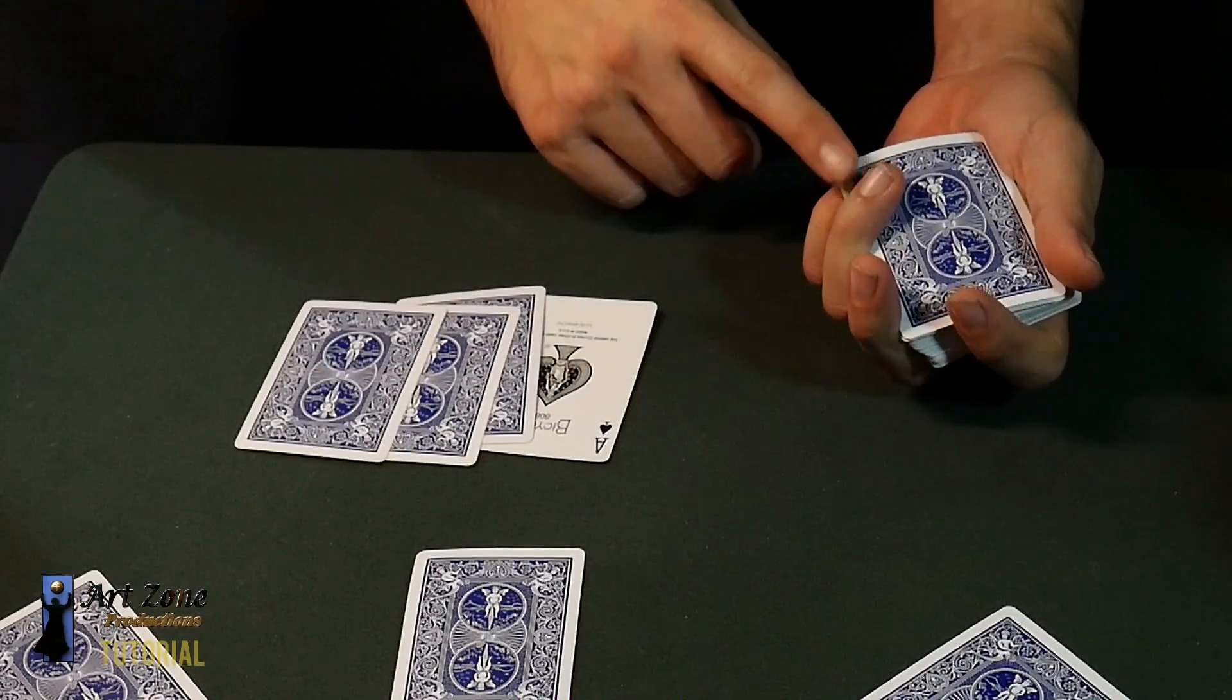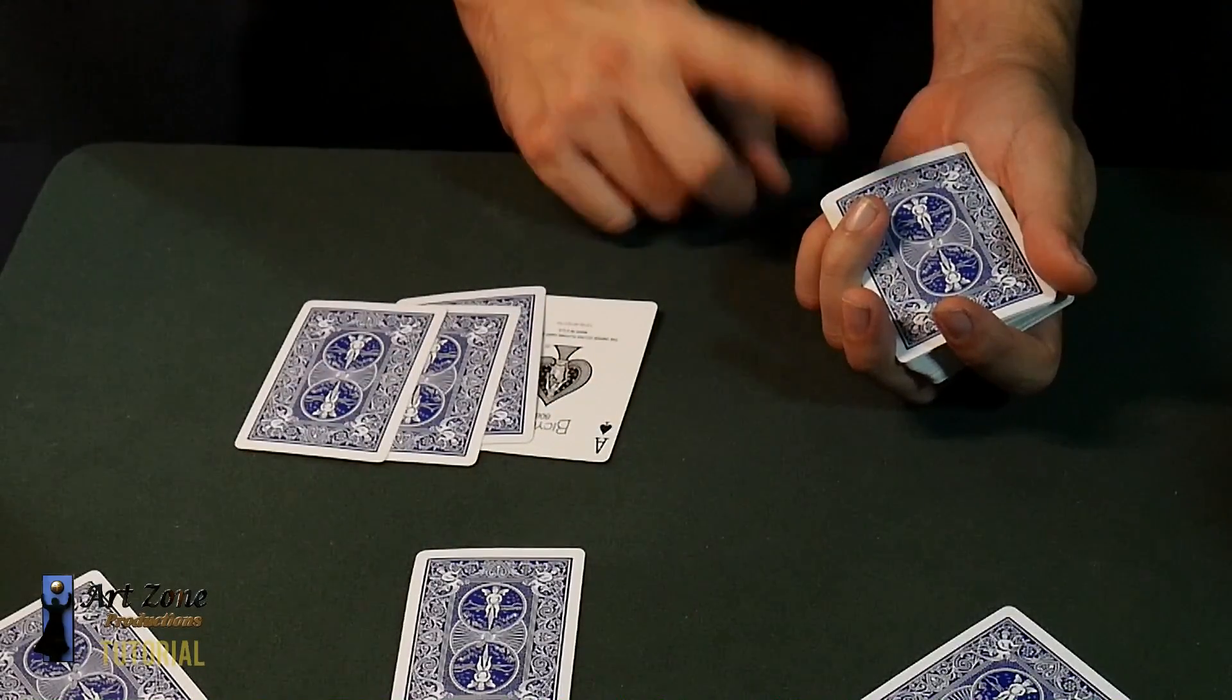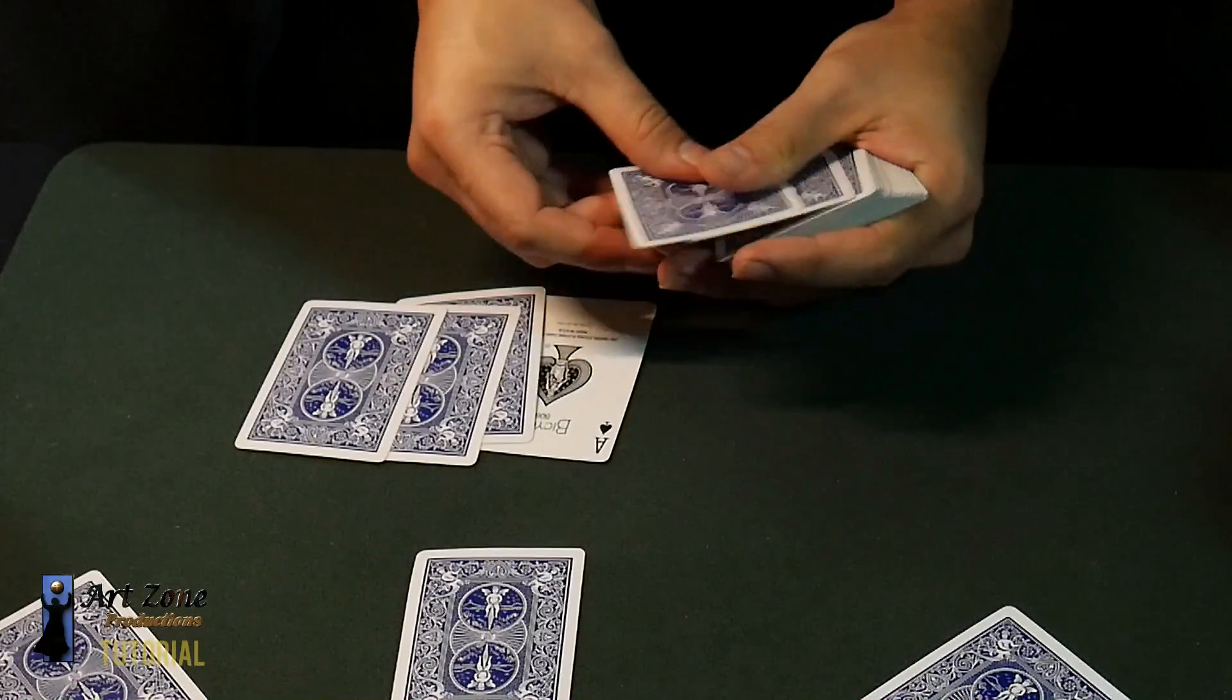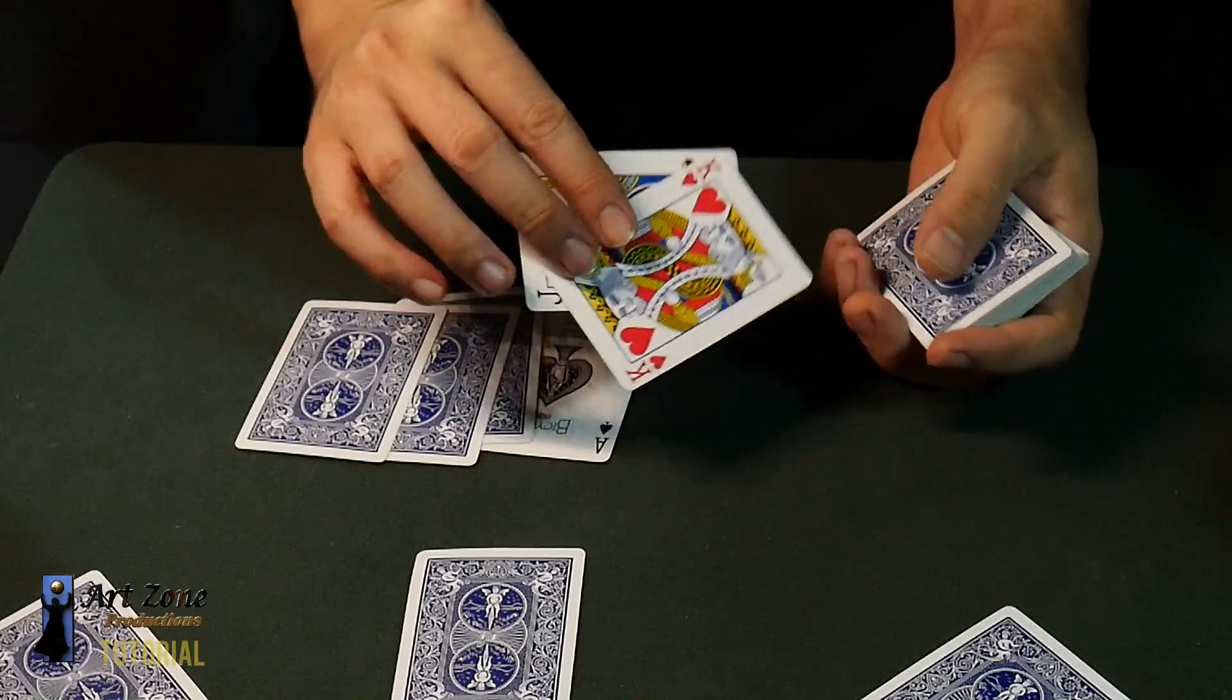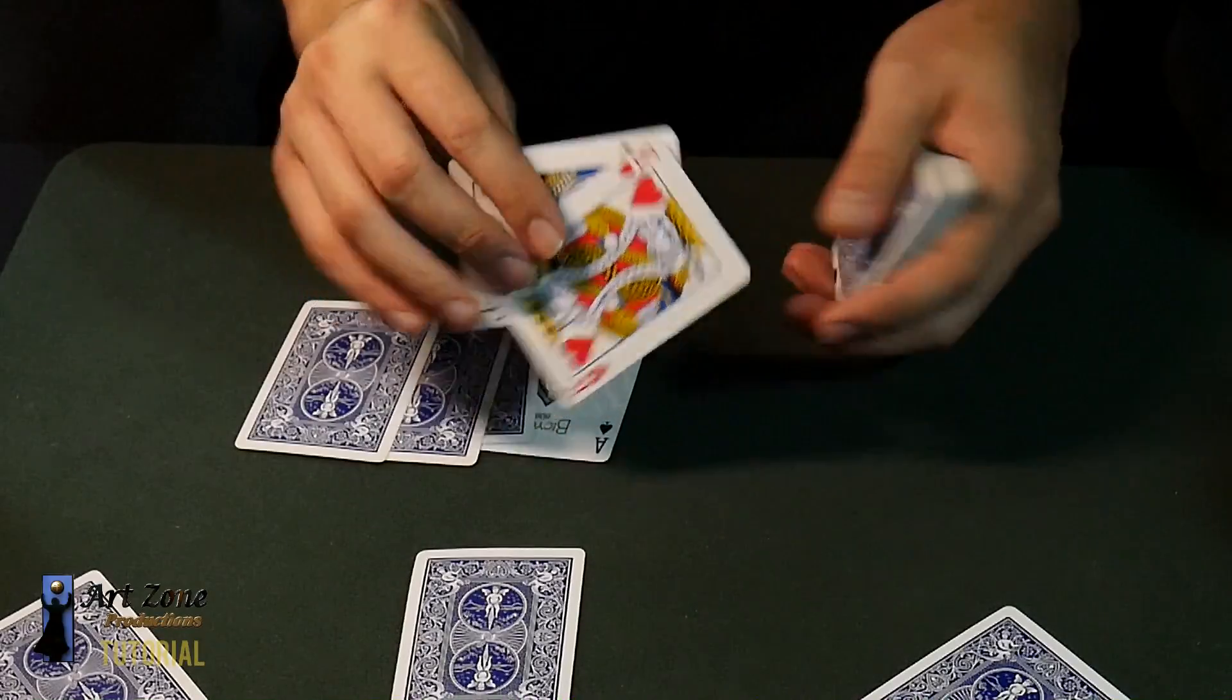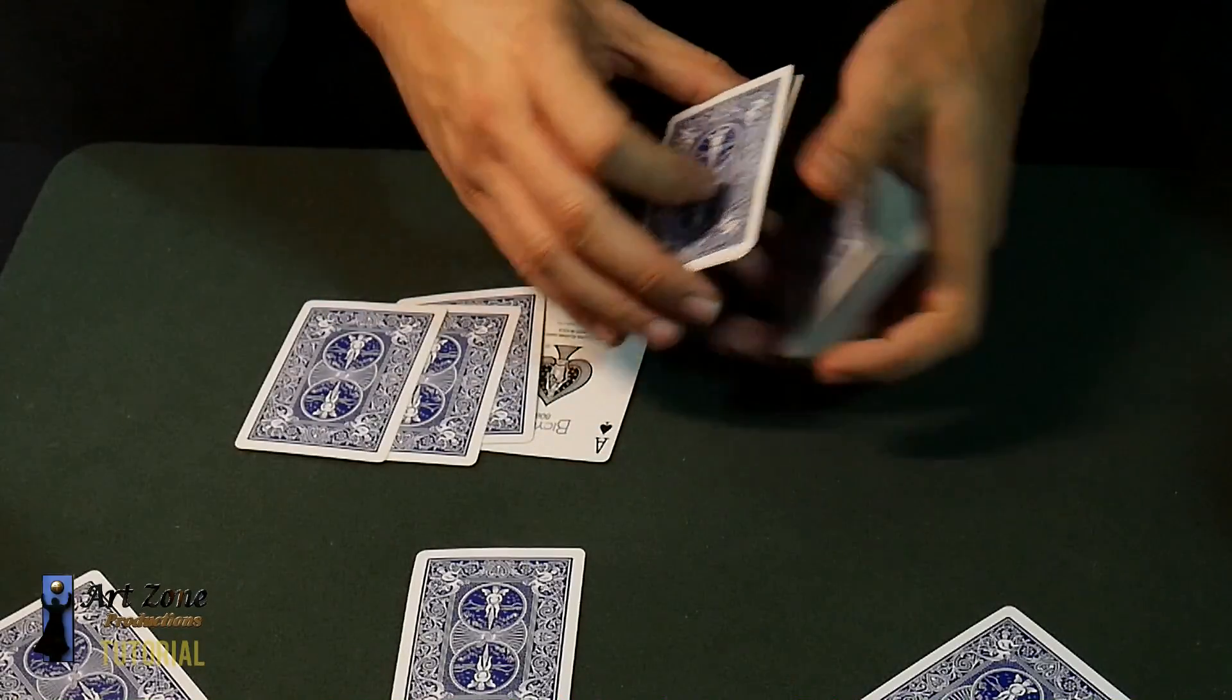And since I already have the pinky break just below the two cards that follow, what I have to do here is move the king, which is in the second from the top, to the very bottom of the deck.